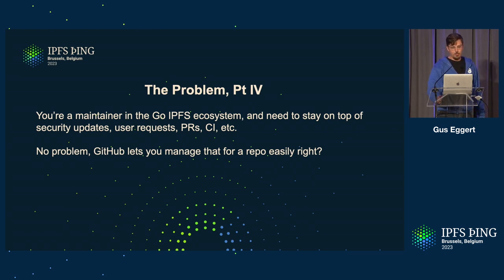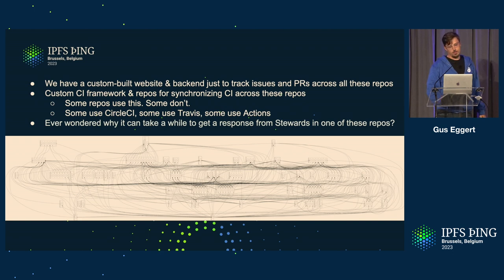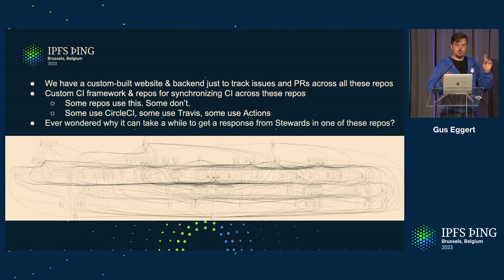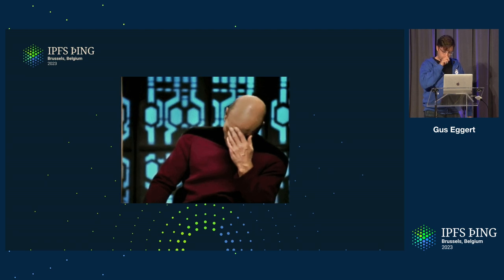Another example: you're a maintainer in the Go IPFS ecosystem and you need to stay on top of security updates, user requests, pull requests, CI failures, and Dependabot things coming in. GitHub has tooling for one repo, but for lots of repos, no. We built a custom website to track PRs and issues across all these things. We have our own CI frameworks and we're synchronizing CI across all of them. Some run CircleCI, some run Travis, some run GitHub Actions. And then people are like, why can't I get the stewards to respond to my request?